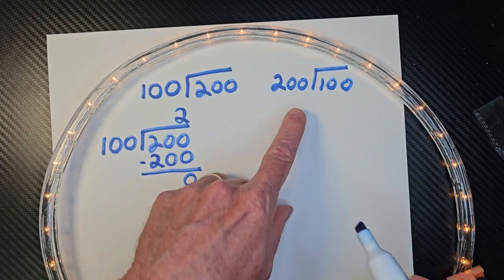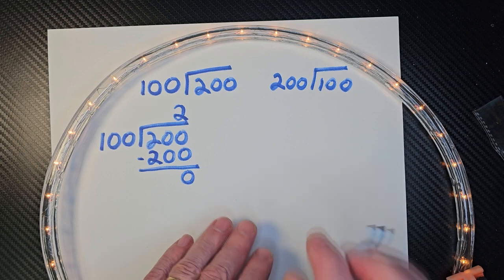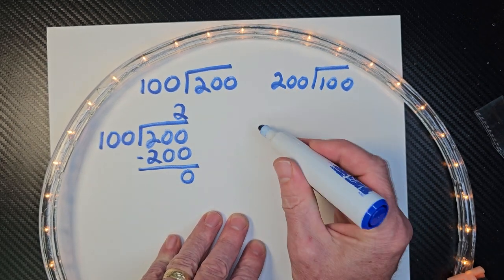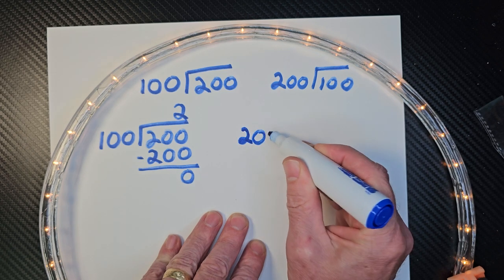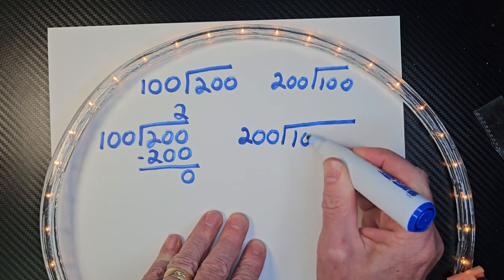All right, so let's take a look at this one right here. This is completely different. I have 100 divided by 200. So let me go ahead and rewrite that. Put that problem right over here. And then 100.